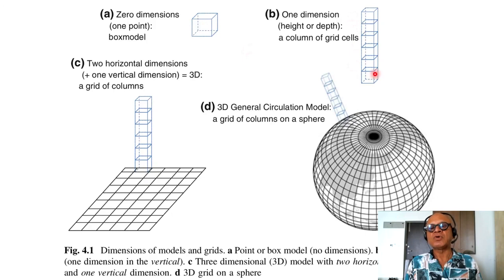This is a single column model, one dimension. You have height in the atmosphere or depth in the ocean, so you can have a column of grid cells which are just stacked, one zero dimensional boxes.